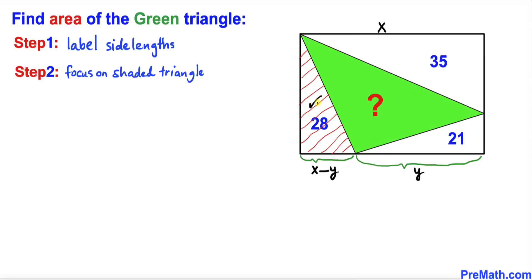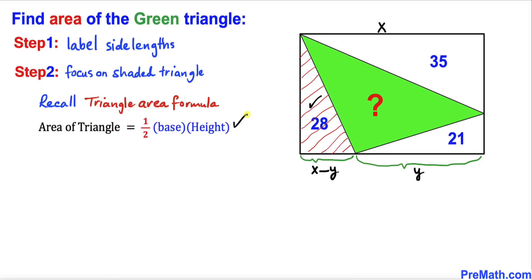Now let's focus on this shaded triangle. Recalling the area of a triangle formula: area equals one-half times base times height. For this shaded triangle, the area is 28 and the base is x minus y, so the height has got to be 56 divided by (x minus y).